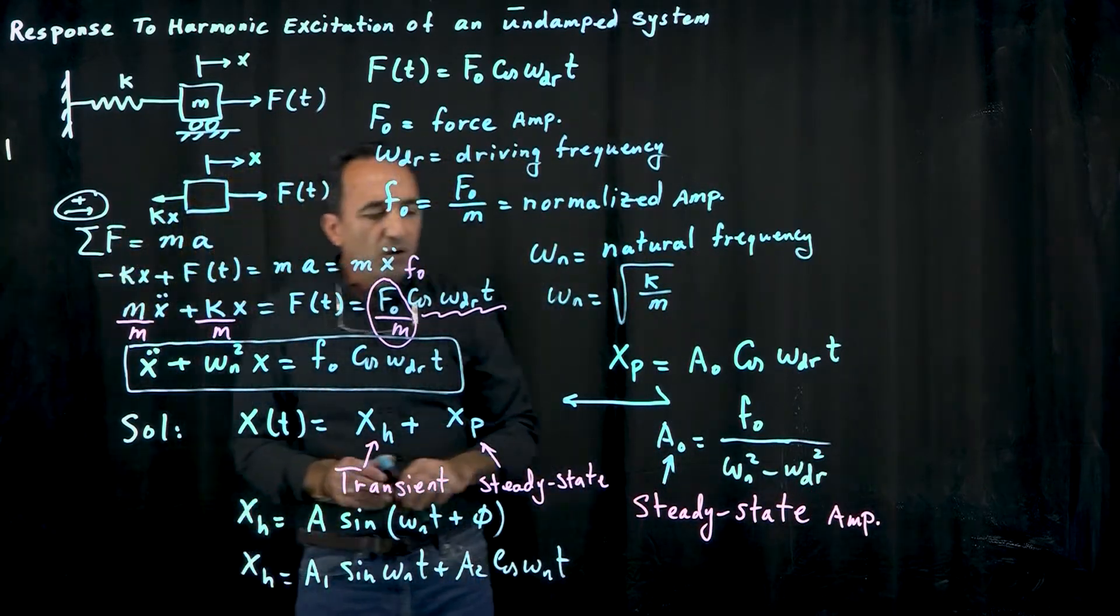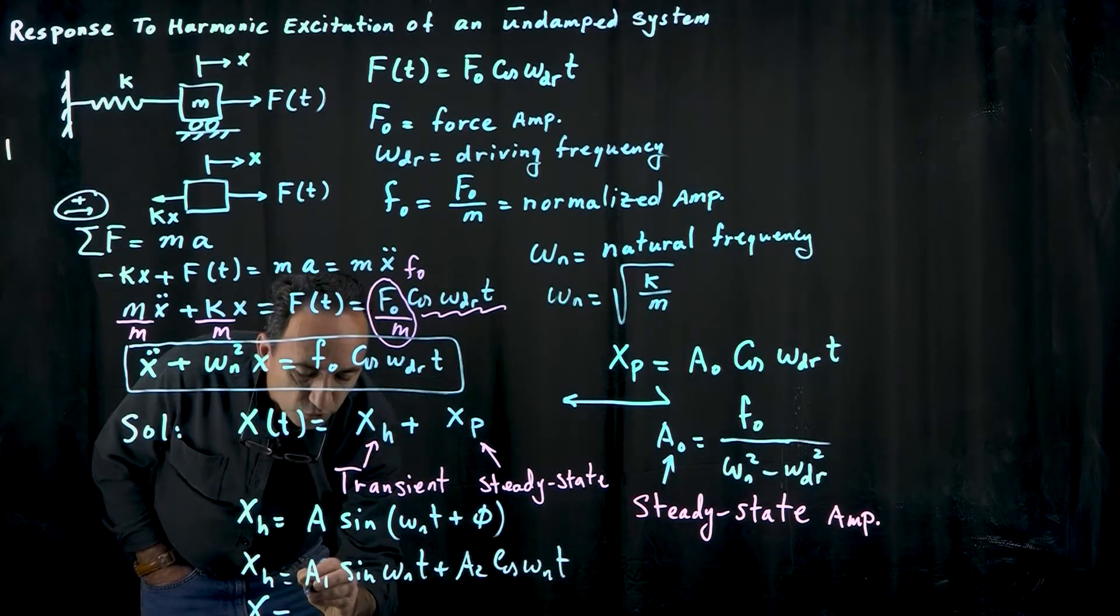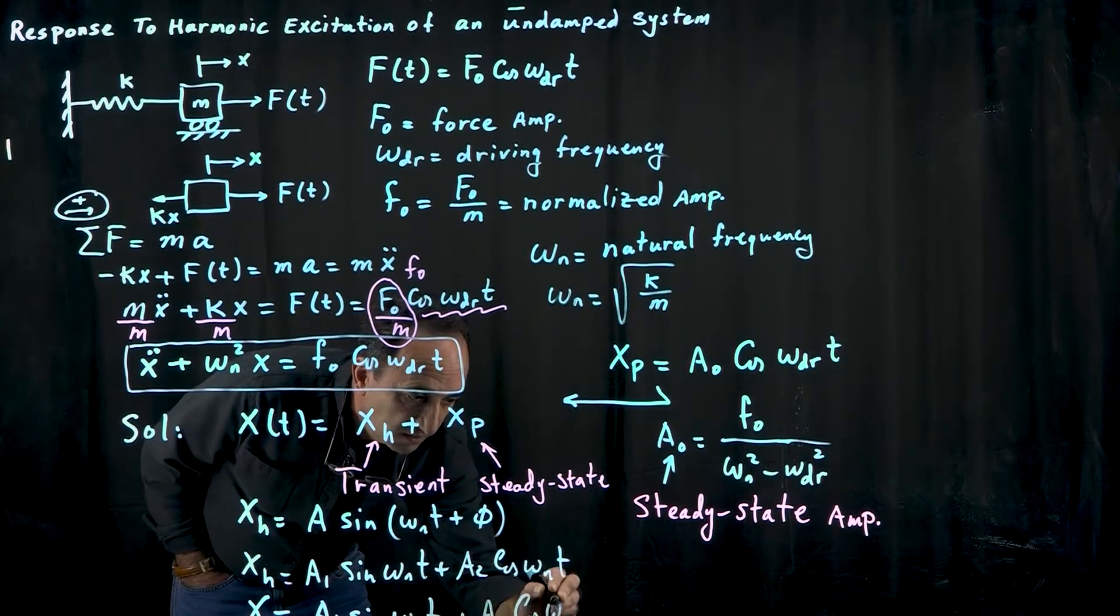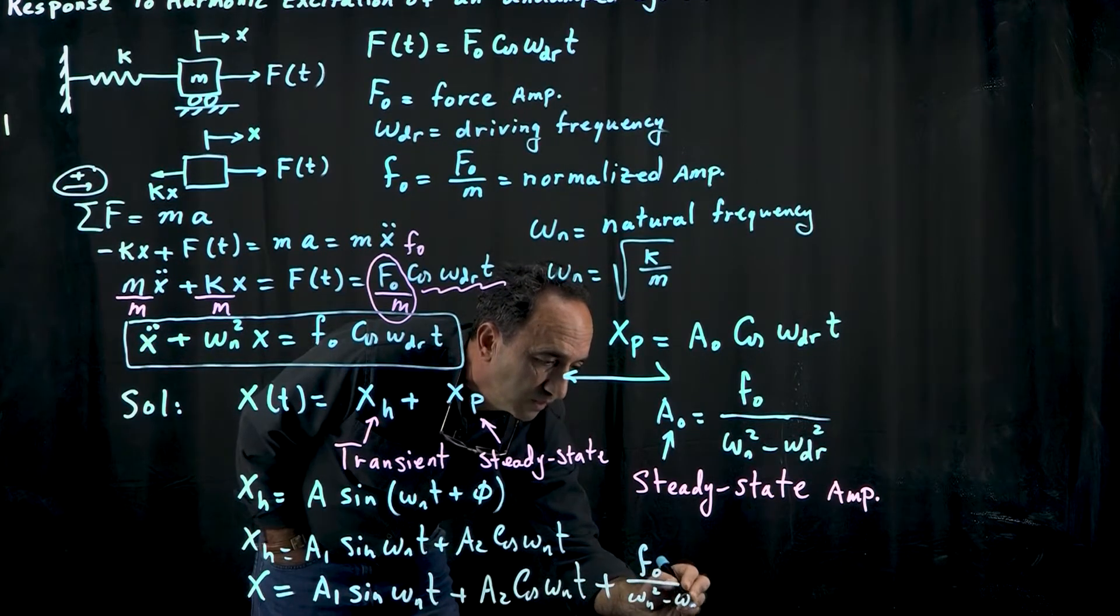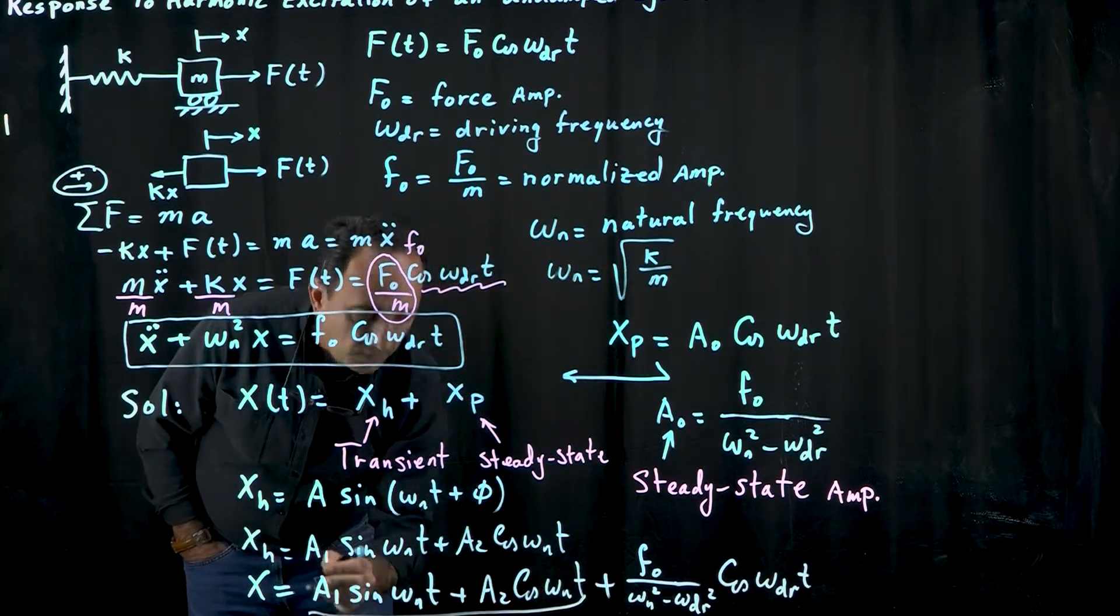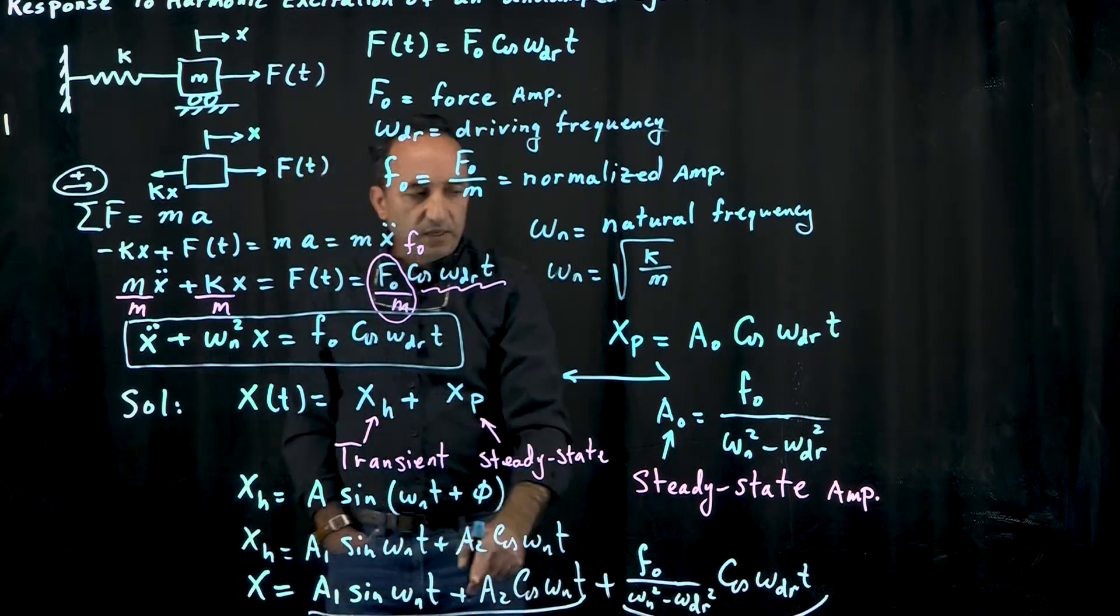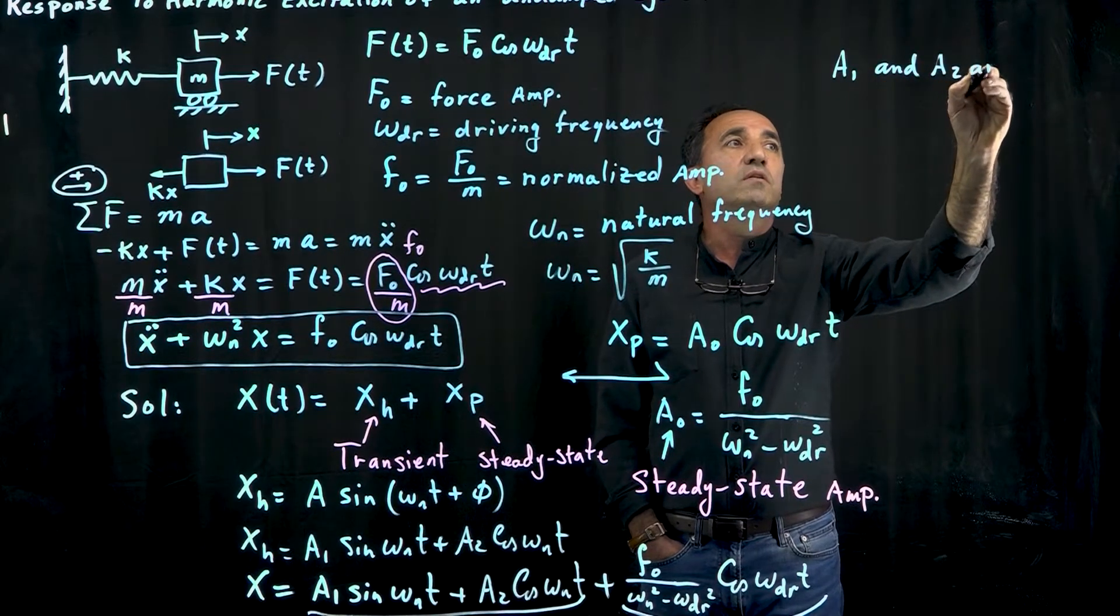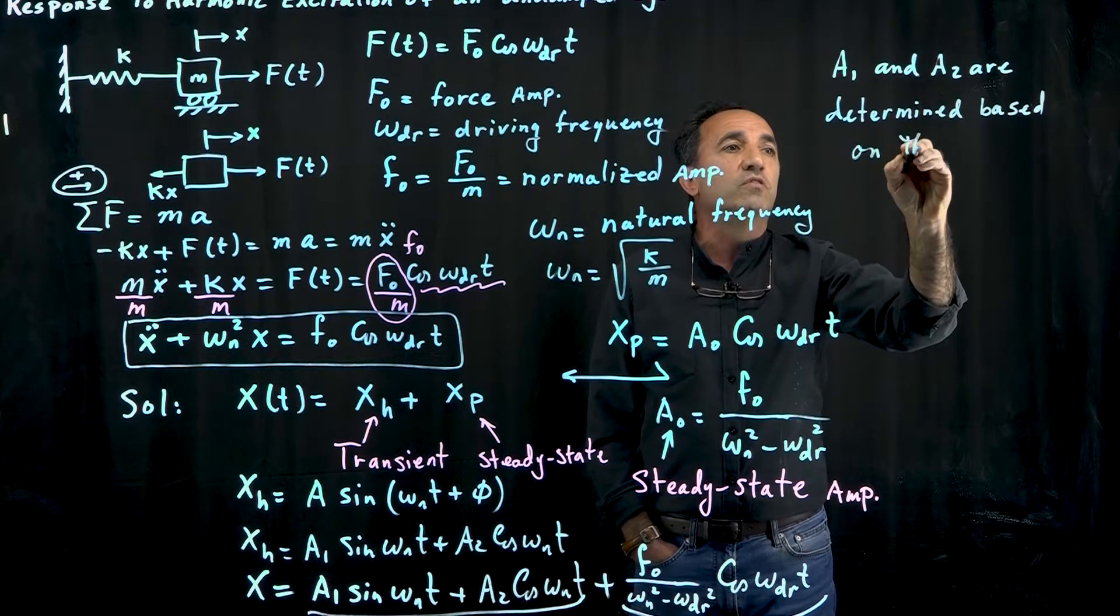What would be the total solution of our system? The total solution, x as a function of time, is A1 sine omega_n t plus A2 cosine omega_n t plus the particular solution which is F0 divided by omega_n squared minus omega_dr squared times cosine omega_dr t. Part of this solution is the homogeneous and this part is the particular solution. The next question is how do you find these constants A1 and A2?